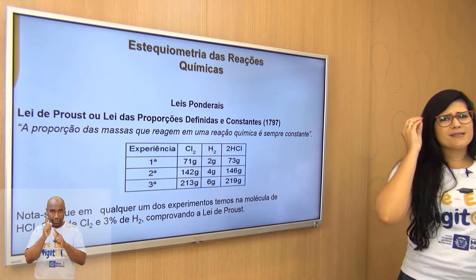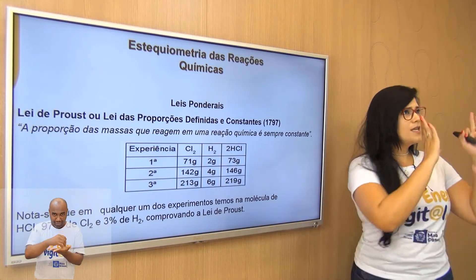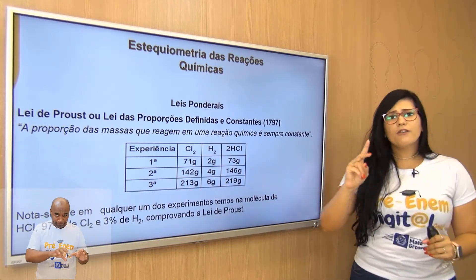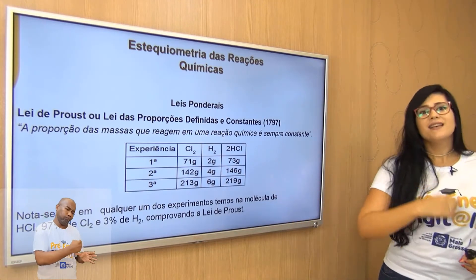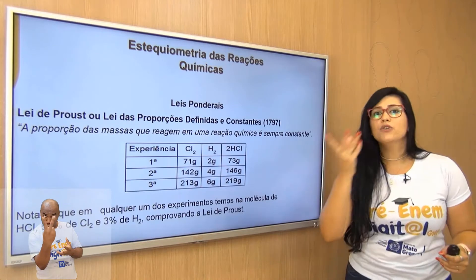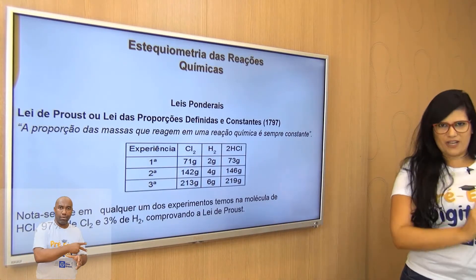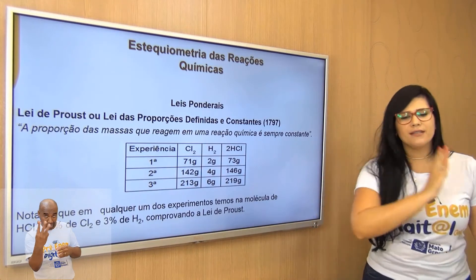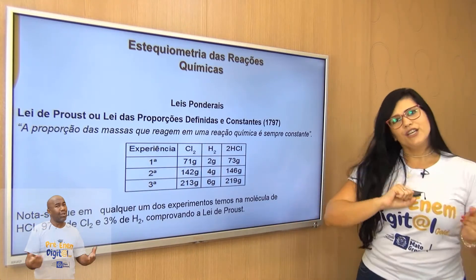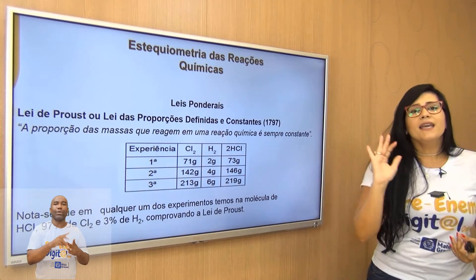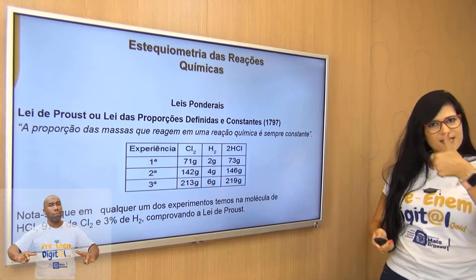É a mesma coisa quando vou produzir um bolo. Se eu quero fazer duas receitas, dobro os reagentes seguindo uma proporção. Se quero três bolos, triplico. Porque a proporção de trigo, de fermento, de leite, de ovo tem que ser a mesma, independente da quantidade de bolos produzida. Entendemos a lei de Proust — proporção constante.